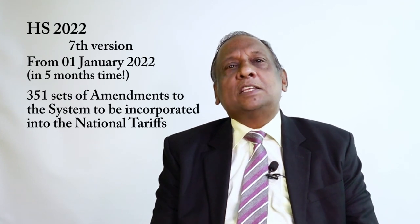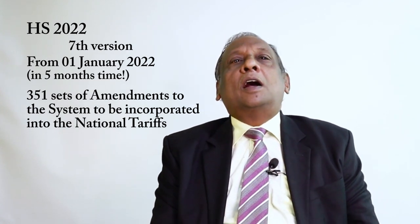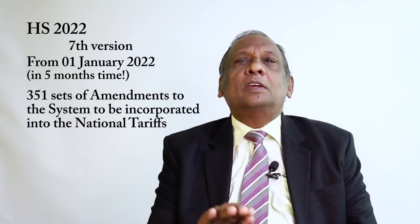There are 21 sections and 99 chapters in HS. As per the 2017 version which we use at present, there are 5,387 six-digit HS codes which move chronologically from basic raw products to complicated manufacturing items — covering a wide range of goods moving across borders.